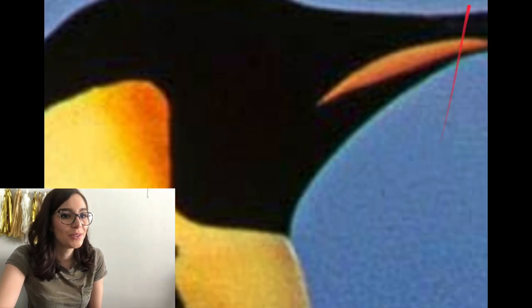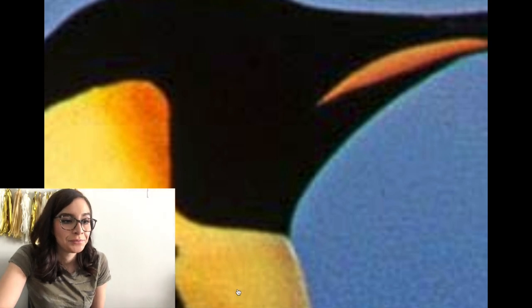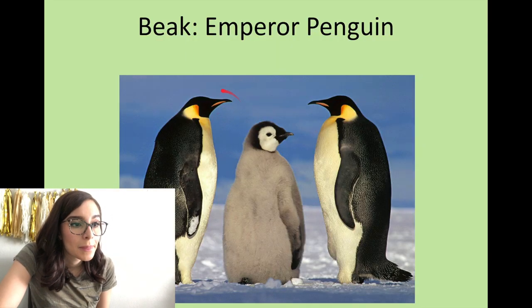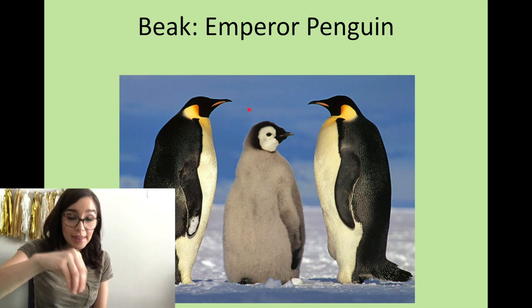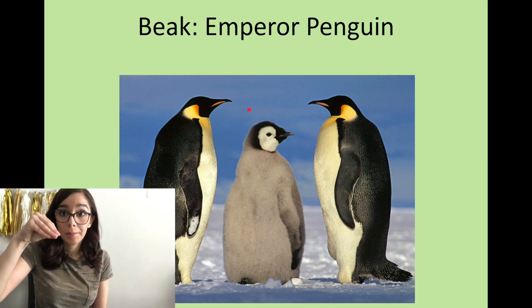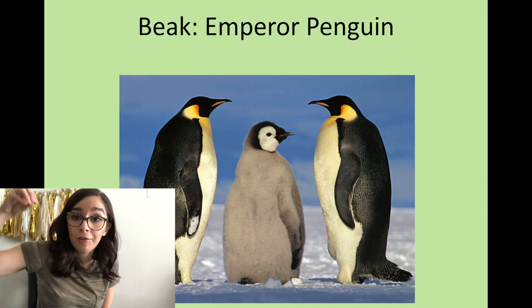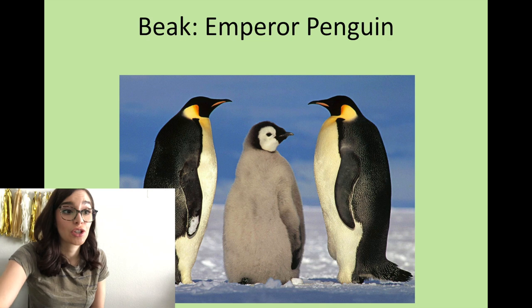I bet you guys know what this is. That was the beak of an emperor penguin. The beak is their mouth. I think their beak is shaped like that so they can grab fish and food that they need to catch to survive.